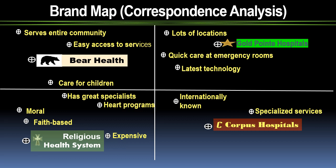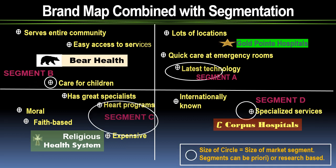The term positioning is one you may hear a lot — it's often mentioned in the same breath as segmentation, and you will be ahead of most people if you really understand the concept. Positioning is what you do to form customer impressions. One method of identifying a product or company's market position is through brand mapping. One means to do this is through correspondence analysis, an analytical tool available in many different statistical software packages. The correspondence map shows the attributes most associated with the brand. For example, Bear Health is most associated with the attributes: serves the entire community, easy-to-access services, and care for children.